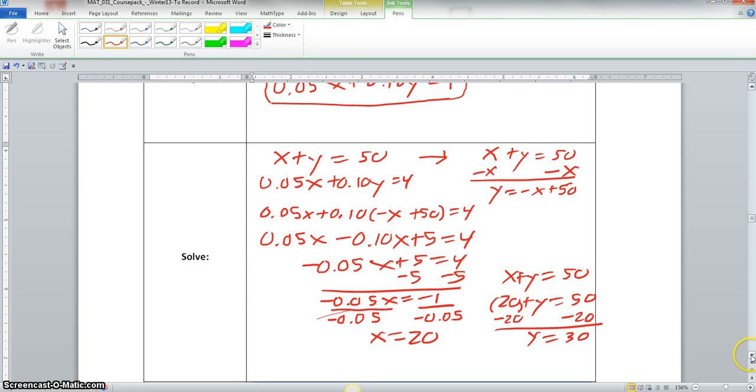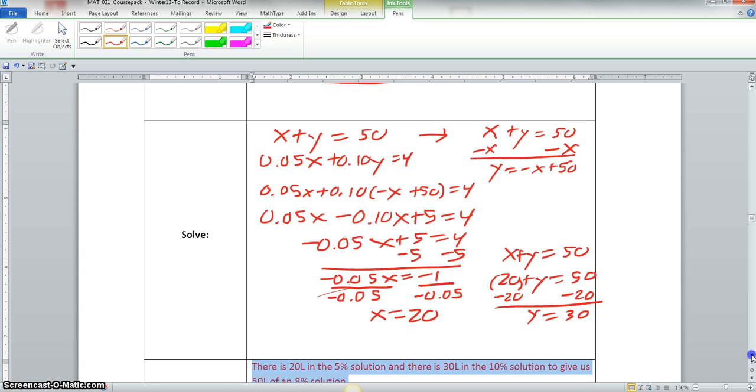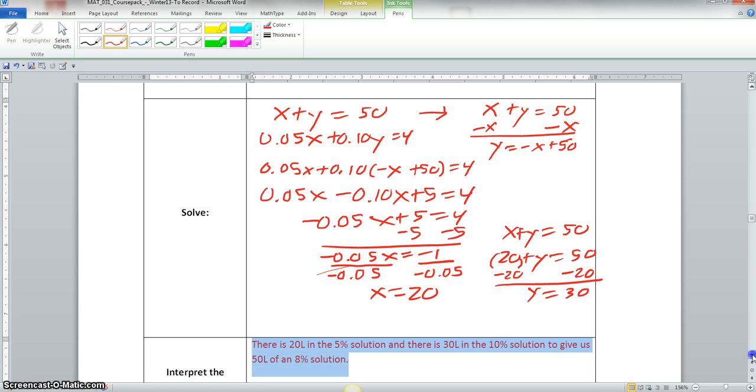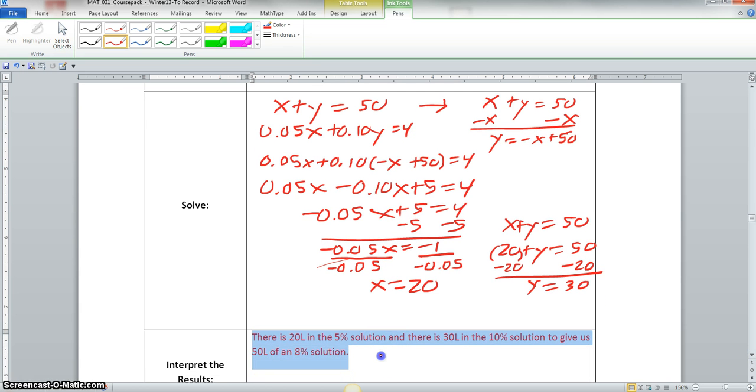So now that we have y equals 30, we can go down here and write our solution. There is 20 liters in the 5% solution, and there is 30 liters in the 10% solution to give us 50 liters of an 8% solution.